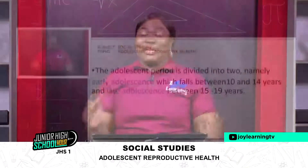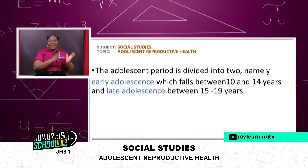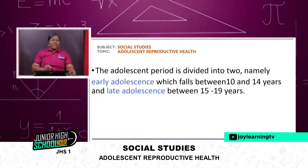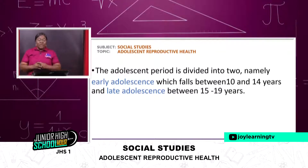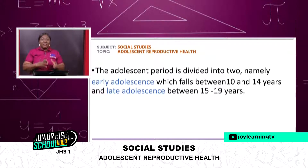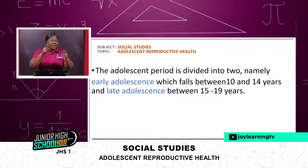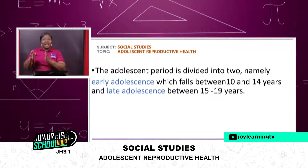I'm sure some of the girls are giggling at home — yes, it's interesting! We are going to discuss about you, that boy watching me right now, and you, that little girl in that transition moving from 10 years to 19 years. So adolescence is a period divided into two: early adolescence, which falls between 10 and 14 years, and late adolescence, between 15 and 19 years.